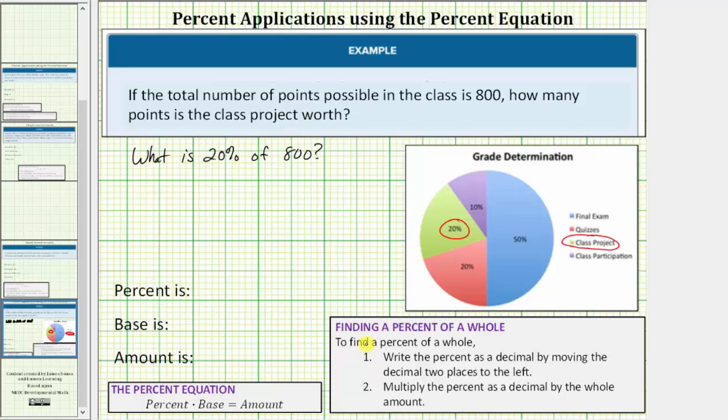First, to find a percent of a whole, step one, we write the percent as a decimal by moving the decimal two places to the left, and then step two, we multiply the percent as a decimal by the whole amount.